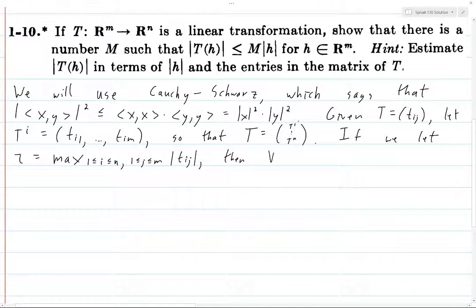Then, for every single i between 1 and n, let's take the norm of T^i squared. Well, this is just going to be the sum of the square of all of the entries in T^i. So T^i consists of t_i1 through t_im, so the norm of it squared is going to be t_i1 squared all the way through t_im squared. But each t_ij, so if we have t_ij, then the absolute value of t_ij is going to be less than or equal to tau for any i and any j.